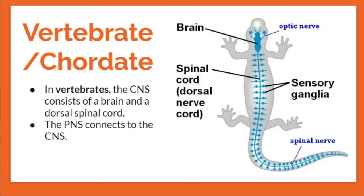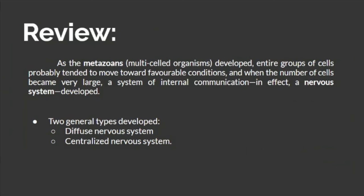All vertebrates share a basic structure: a CNS with a brain and spinal cord, and a PNS made up of peripheral sensory and motor nerves. One interesting difference between invertebrates and vertebrates is that nerve cords of many invertebrates are located ventrally — toward the front of the body — whereas vertebrate spinal cords are located dorsally, toward the back. In review, as metazoans developed, a nervous system arose, with two general types: diffuse and centralized.